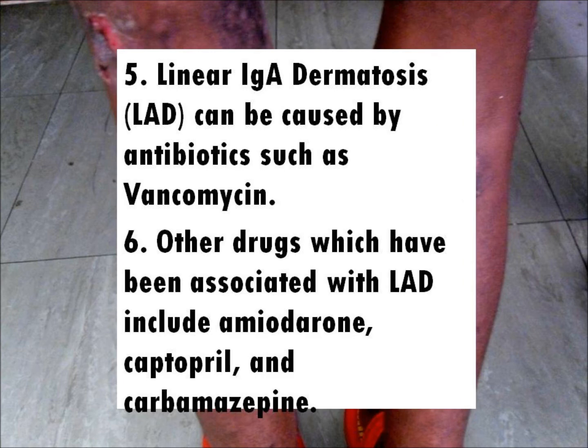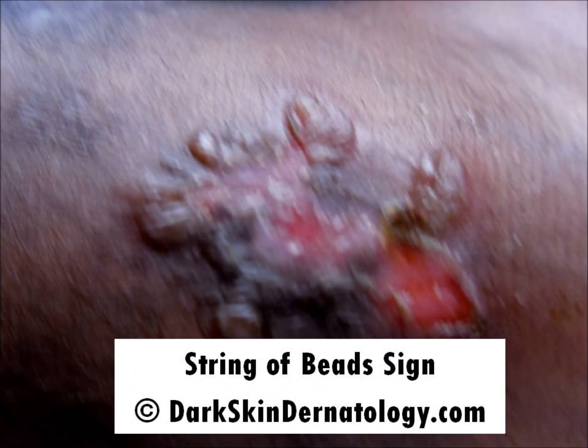Fact 5: Linear Immunoglobulin A Dermatosis can be caused by antibiotics such as vancomycin. Fact 6: Other drugs which have been associated with Linear Immunoglobulin A Dermatosis include amiodarone, captopril, and carbamazepine.